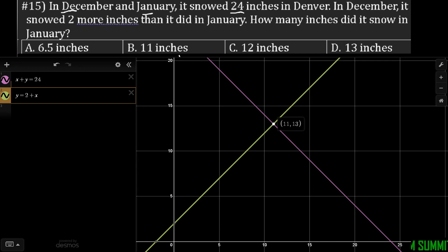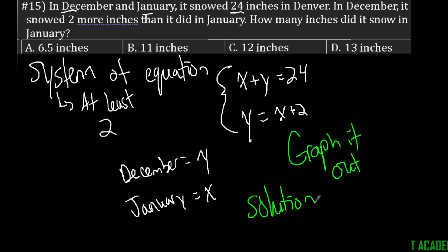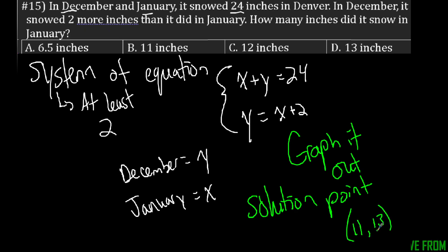As soon as I find that point, I'll be able to figure out what I'm looking for. Since x is going to be my value for January, I can say that this solution point is going to be 11. So you have to be careful — find the solution point and take the x value. Our solution point was 11 comma 13. Since January is x, the answer is D, which is 11.